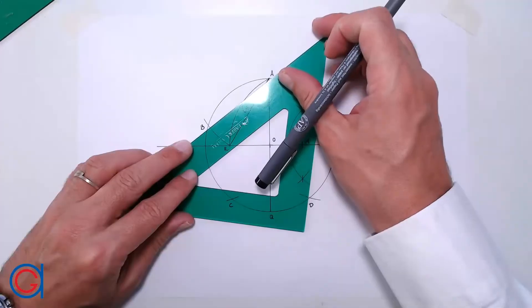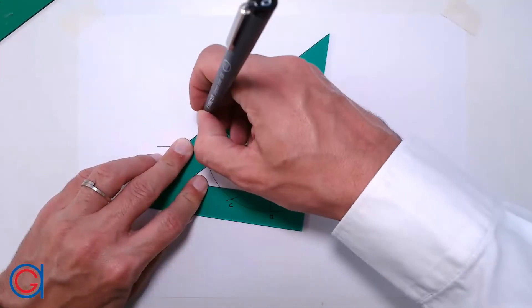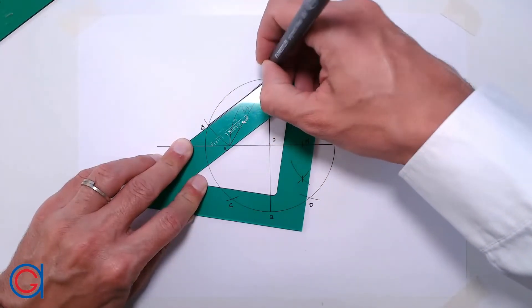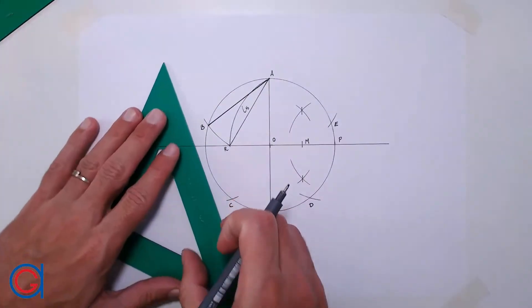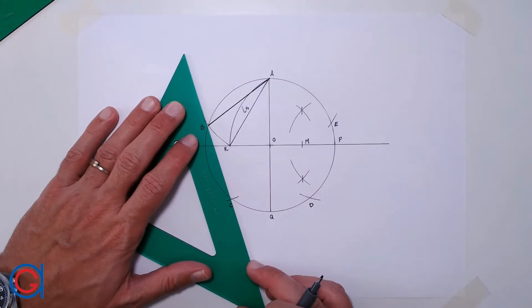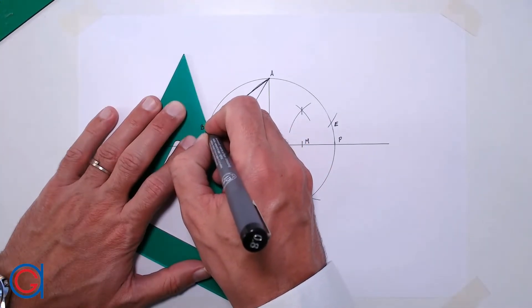And finally, with a thicker line, we will join our vertices from B to A, from B to C.